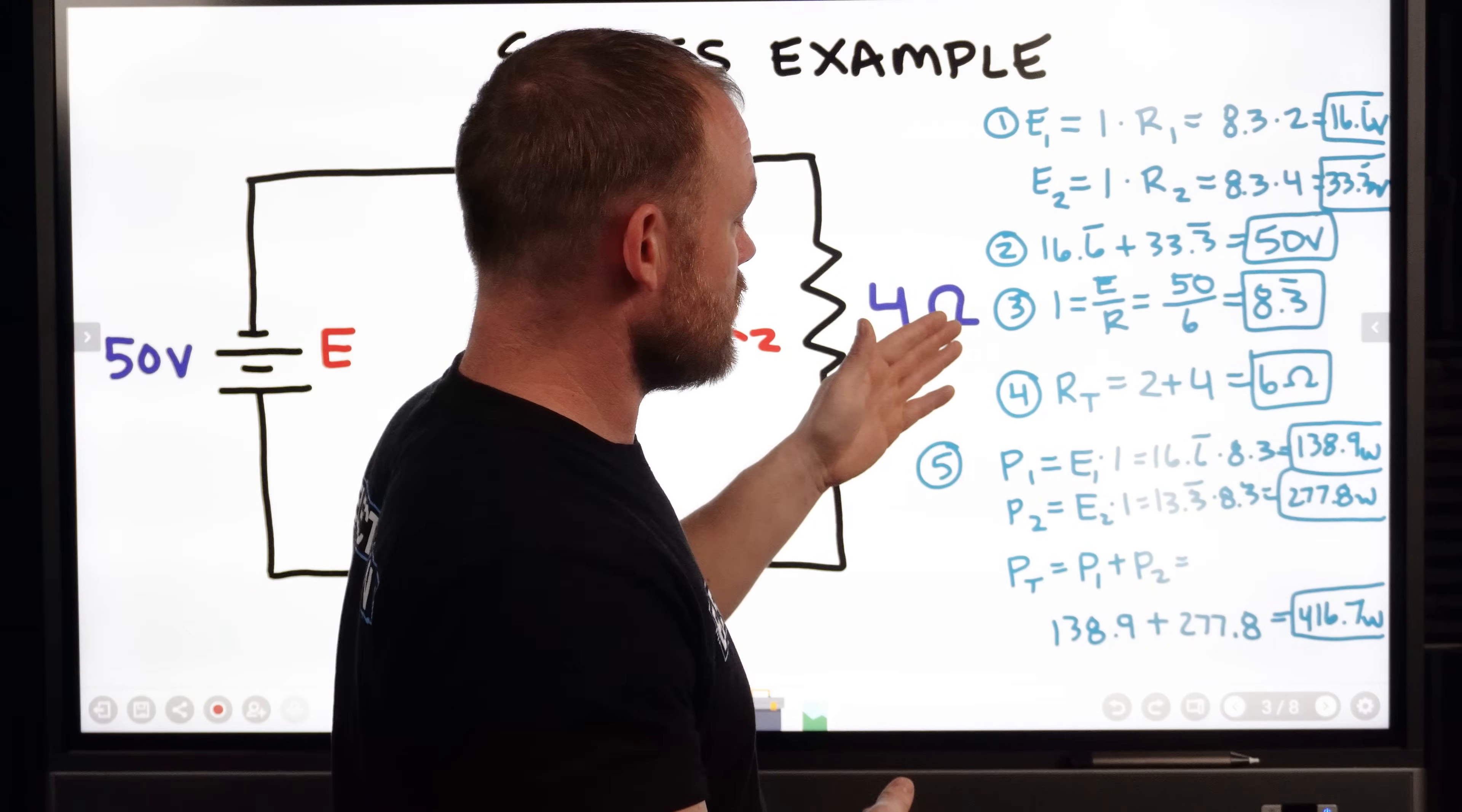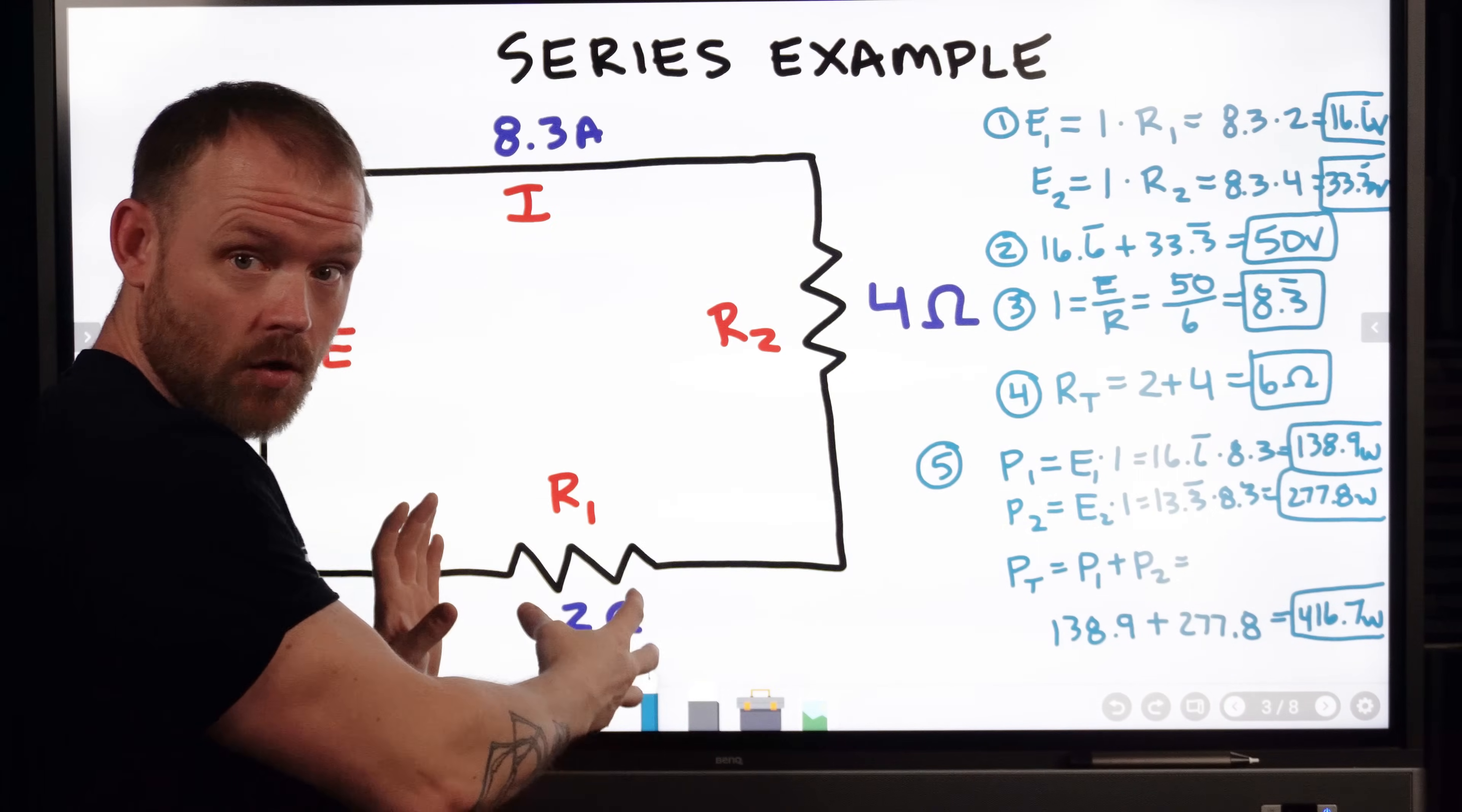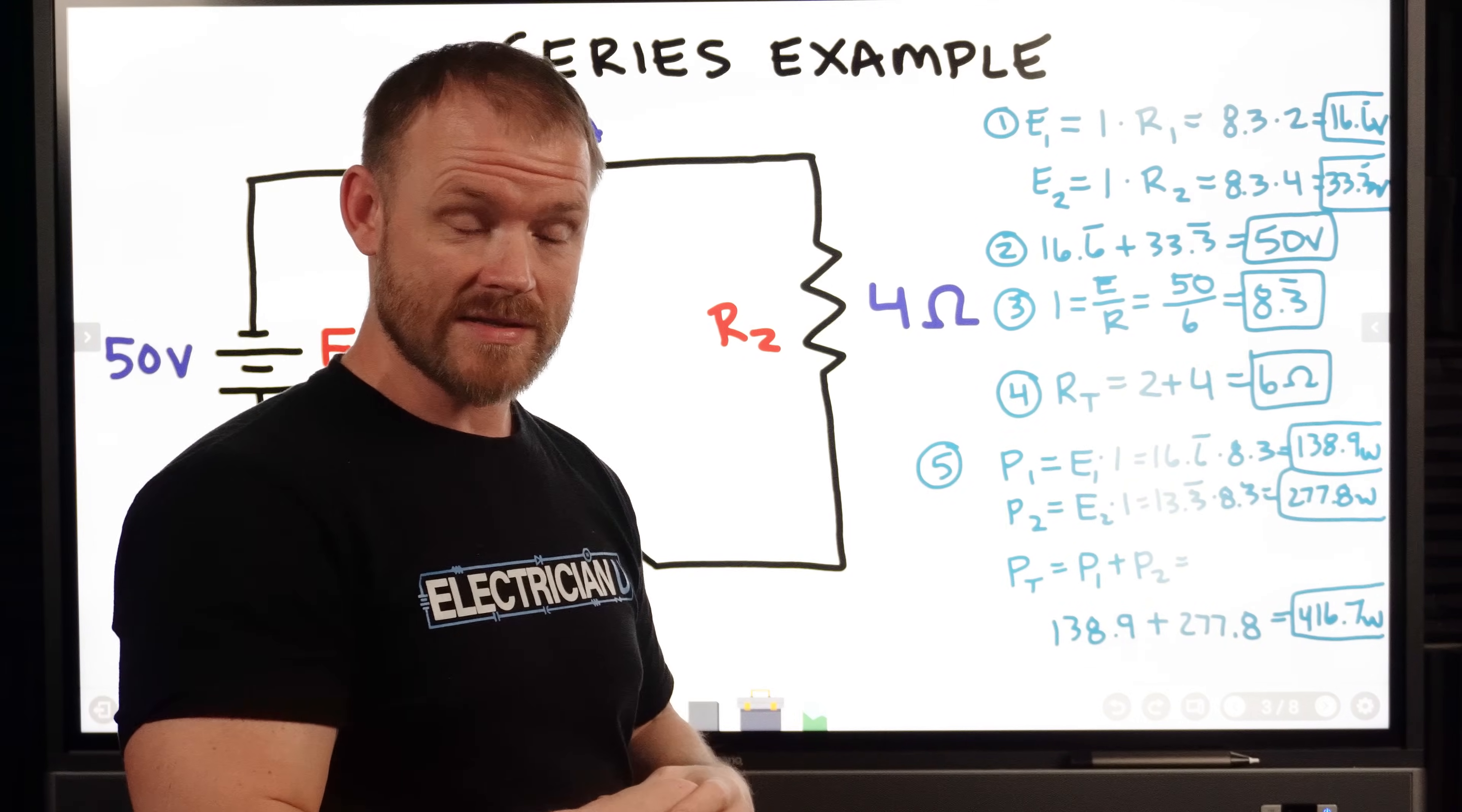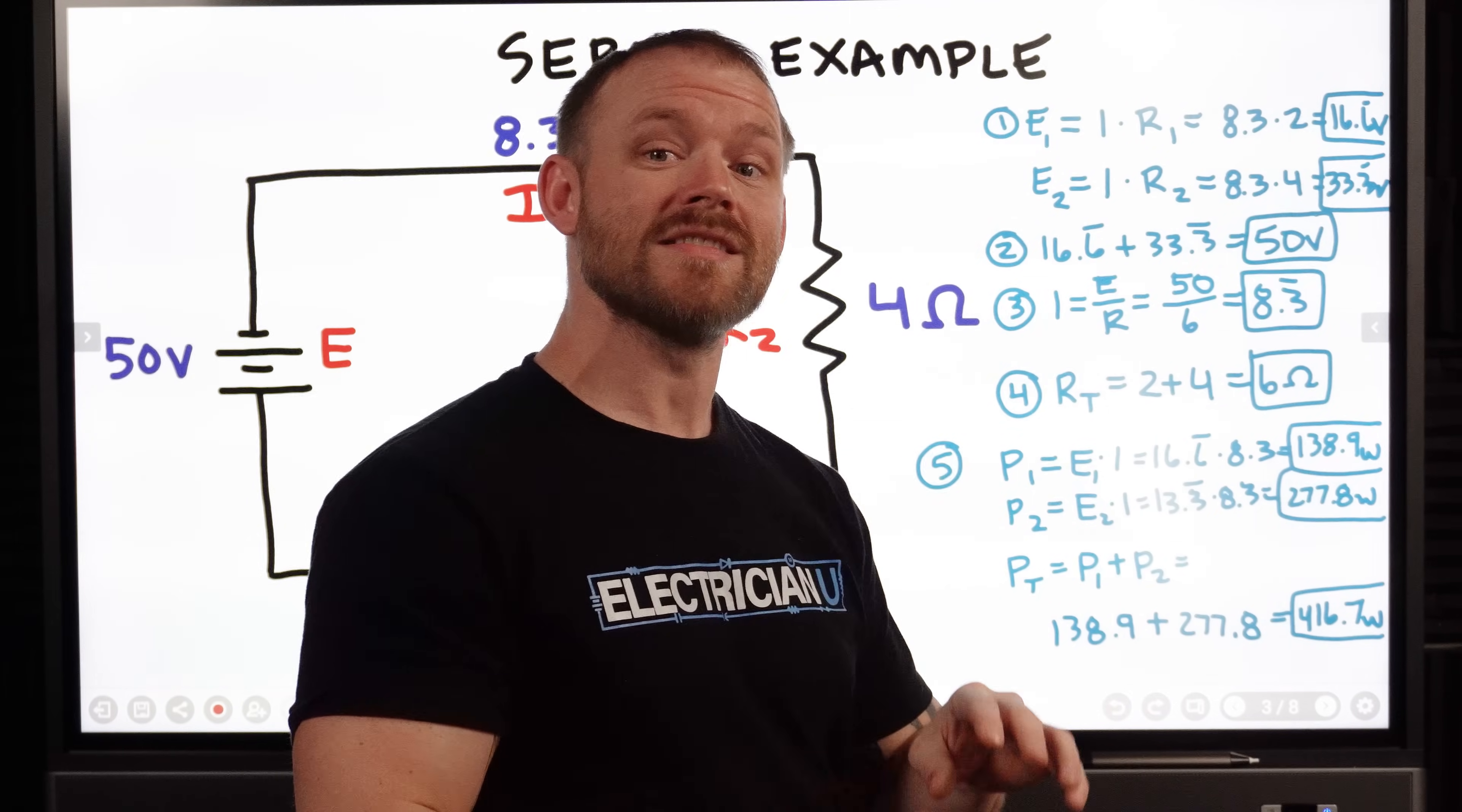So then with power, we're using P equals E times I. This is the Joules law portion of Ohm's law. It's not actually Ohm's law, but it is a different formula wheel. So P equals E times I, but we're going to be taking P one, the power of resistance one times the voltage that's dropped across that. When we apply a voltage to figure out what that resistor is going to dissipate. Because remember, we're not getting the full amount of voltage across that. We're getting a dropped voltage. So that dropped applied voltage times whatever that specific resistance is, is going to give us a certain amount of dissipation. So P one equals E one times I, that would be 16.6 for our E one times 8.3 amps. And that's 138.9 Watts coming off that one resistor.